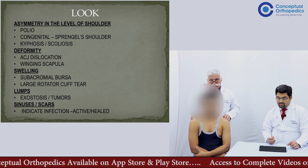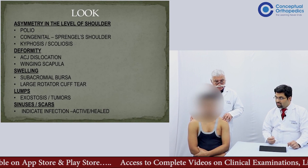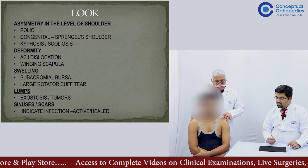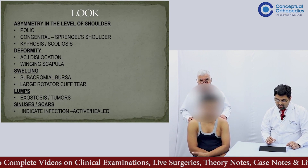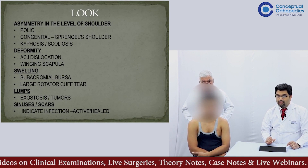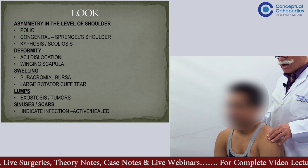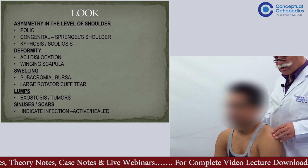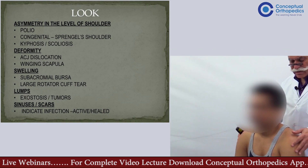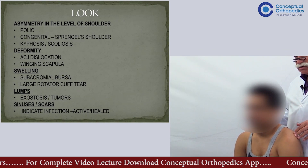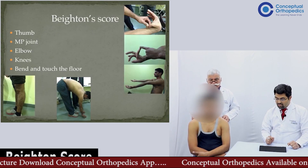One looks for deformity, which can occur in acromioclavicular joint dislocation where the lateral end of the clavicle becomes prominent. One can look for wasting, winging of the scapula from behind, and swelling of the subacromial bursa — seen rarely but more easily visible in large rotator cuff tears. One also looks for any exostosis around the shoulder, as well as scars and sinuses if present.